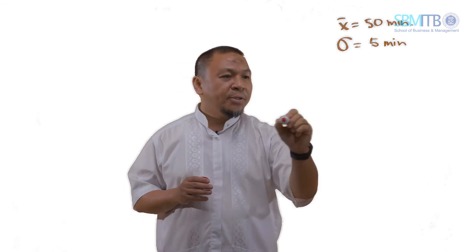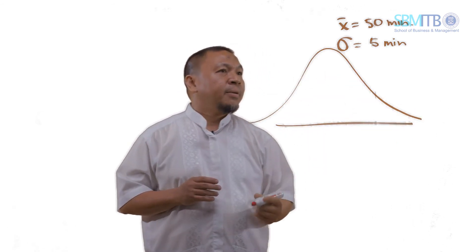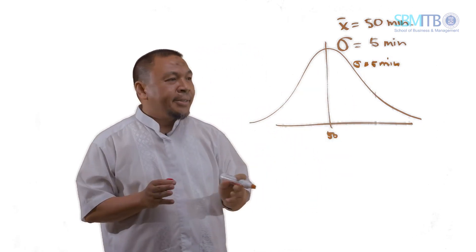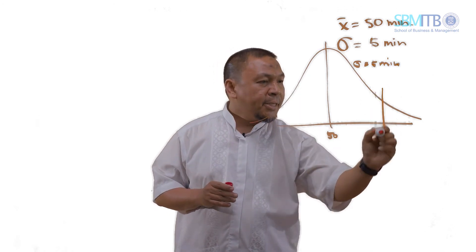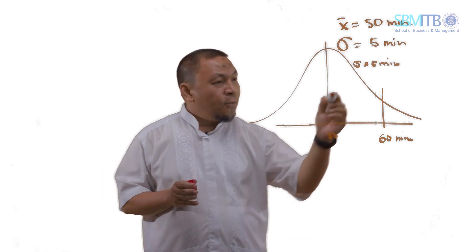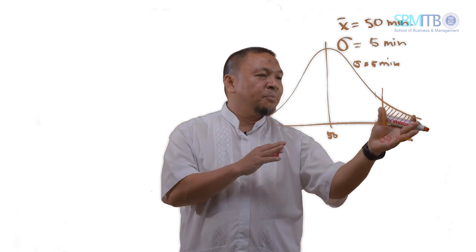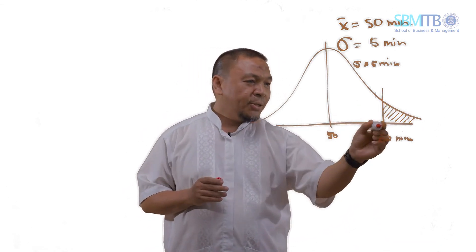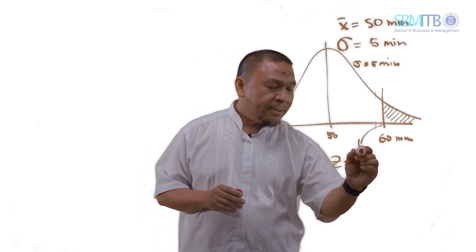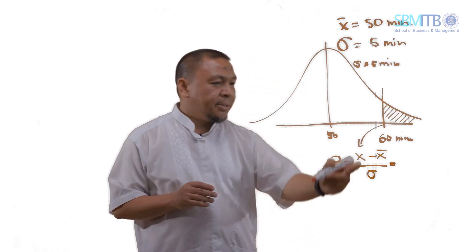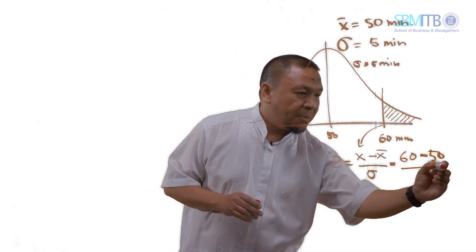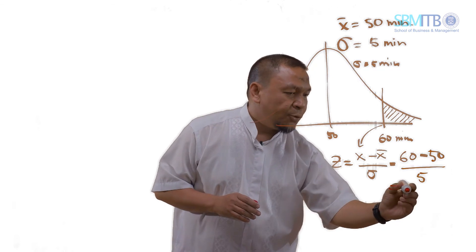If we plot the distribution, we get a distribution centered at 50 minutes with sigma of 5 minutes. According to the standard, the waiting time should not be more than 60 minutes — that is our specification. To calculate sigma capability, we estimate the defect probability by calculating the Z value. Z equals (X minus X-bar) divided by sigma. In this case, X is 60, X-bar is 50, divided by 5 — so we get Z equals 2.